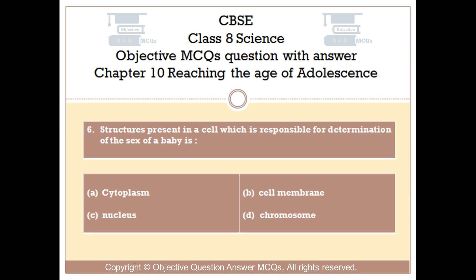Question number 6. The structure present in a cell which is responsible for determination of the sex of a baby is: Option A cytoplasm. Option B cell membrane. Option C nucleus. Option D chromosome.